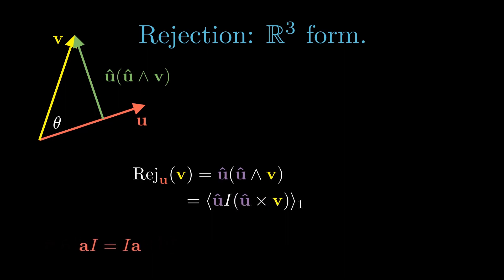Because the R3 pseudoscalar commutes with all grades, u hat i equals i u hat. We use the fundamental identity to expand the vector product as a dot product and a cross product term. We split our grade selection operator into two pieces, and then factor out the scalar terms.